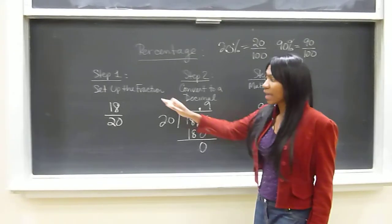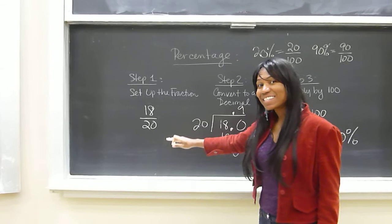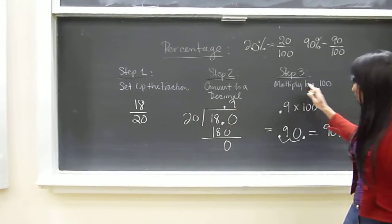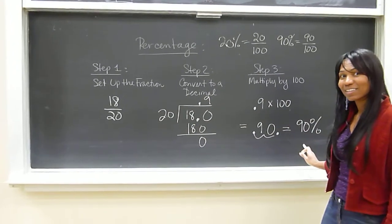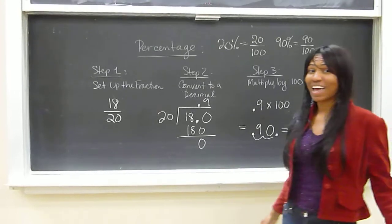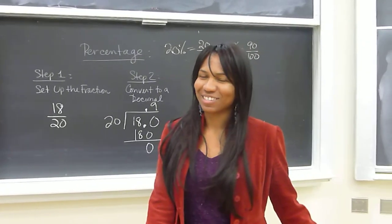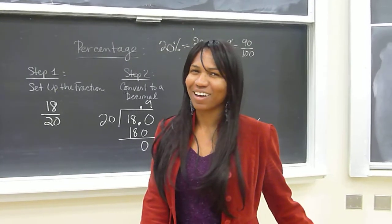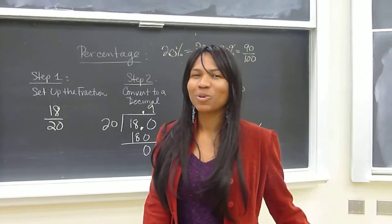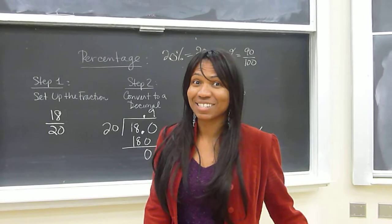So 18 over 20 is essentially 90%. So hopefully right now you can understand percentages, and you'd be a part of that 20% who loves percentages now.